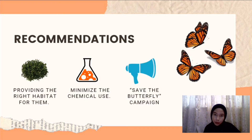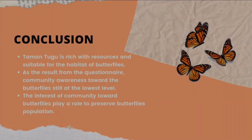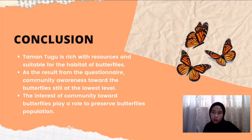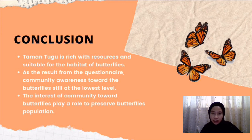Organizing a campaign can help people learn more about butterflies and their importance to our ecosystem, so people can play a key role in protecting them now and in the future. To conclude, Taman Tugu is an urban park rich in resources and suitable to attract various species of butterfly. The questionnaire survey shows that community awareness of the declining number of butterflies in urban parks is still at the lowest level, and the interest of the community toward butterflies plays a key role in preserving butterfly populations and habitats in the future.